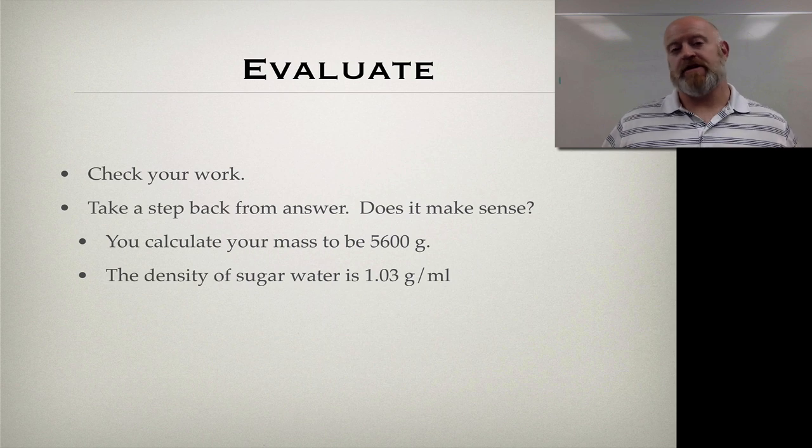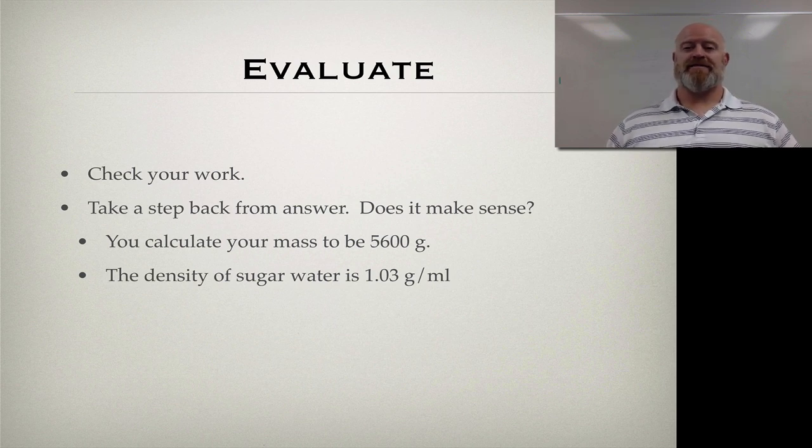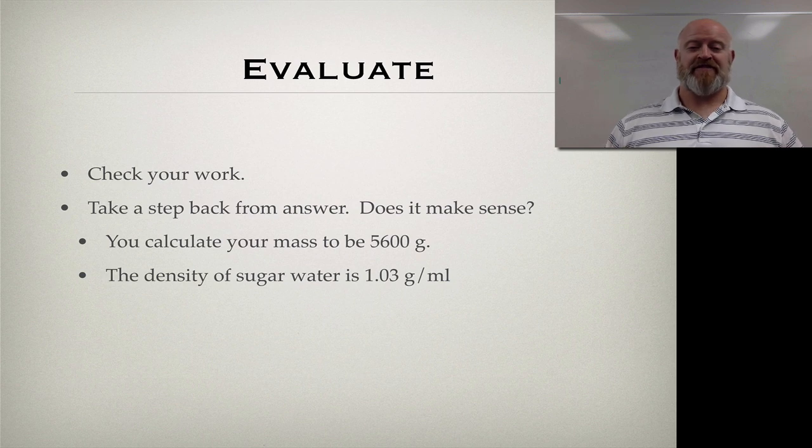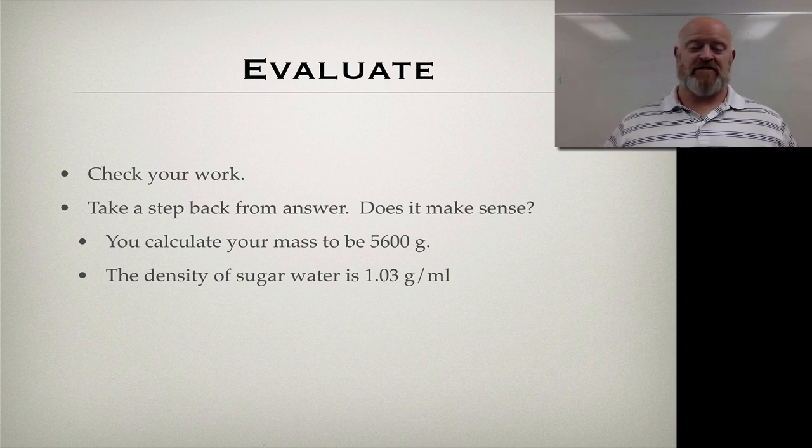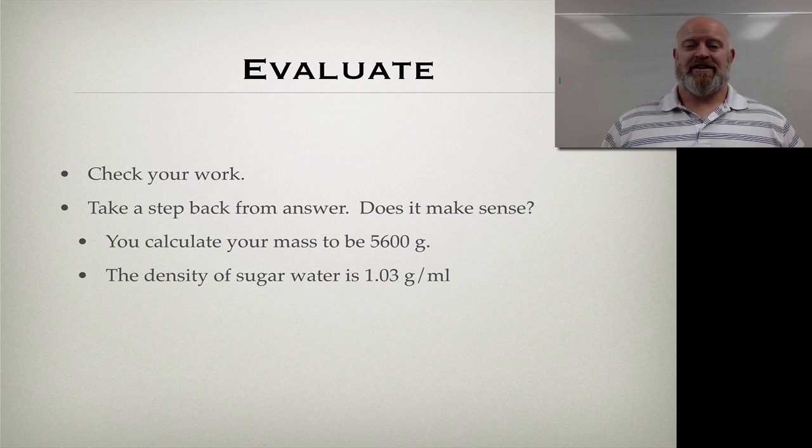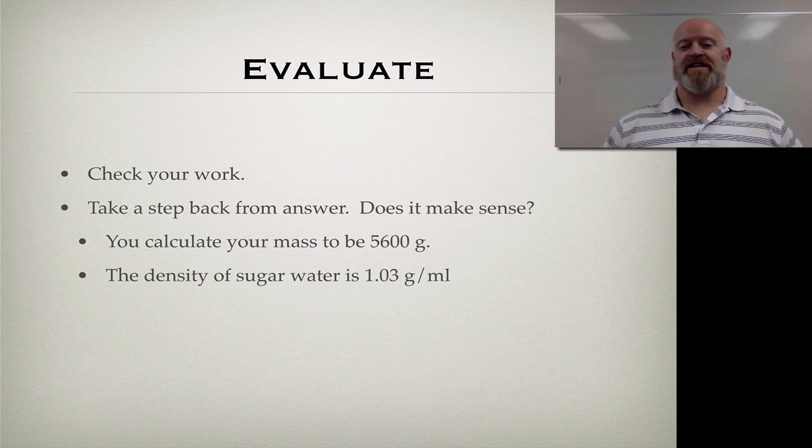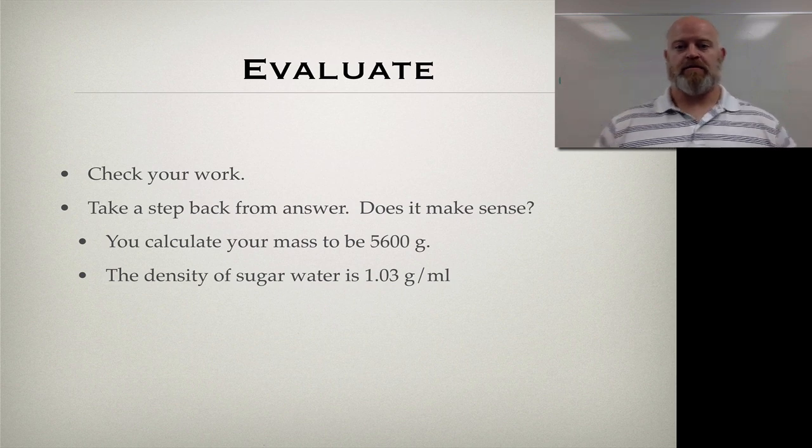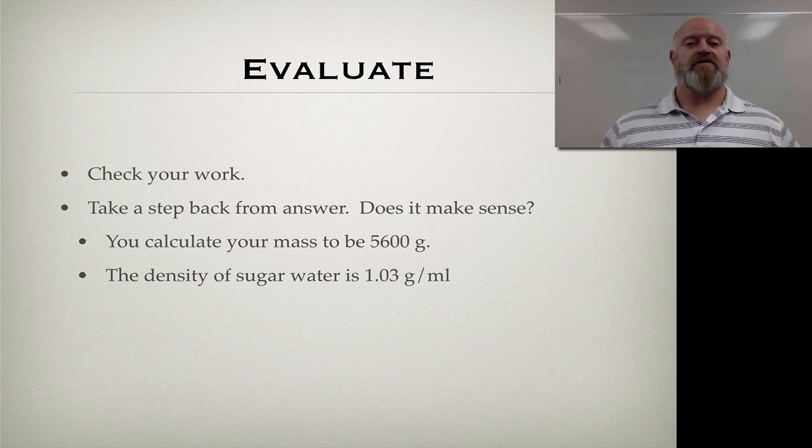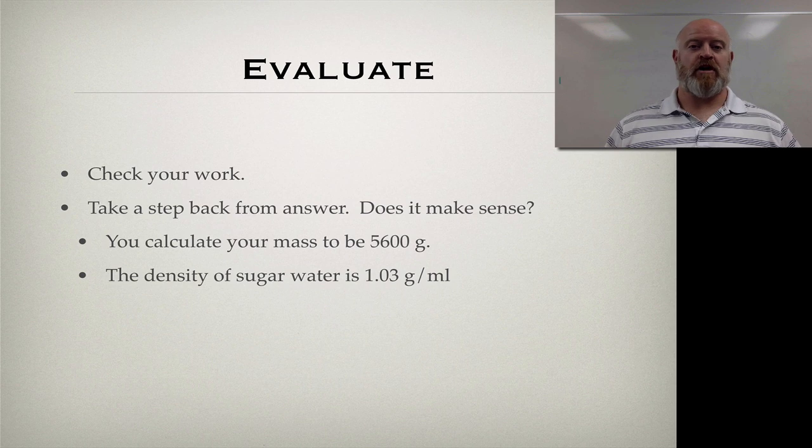Here's a step that a lot of students forget: take a minute to evaluate. Check your work, take a step back from the answer. Does it make sense? For example, if you calculate your mass to be 5600 grams, is that reasonable? There's 454 grams in one pound, so 5000 grams is actually a small number. Our weight in grams should be much more than this, it should be 56,000 to 560,000.